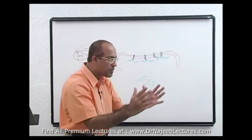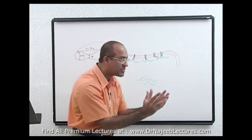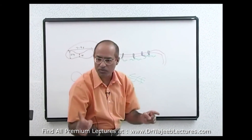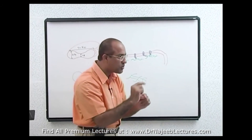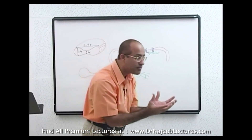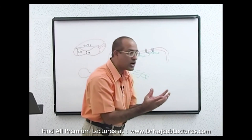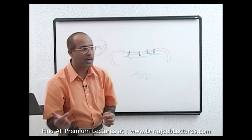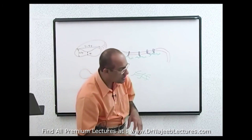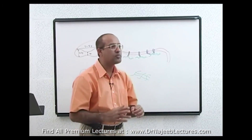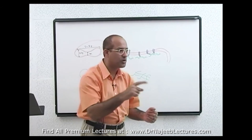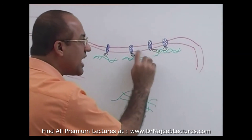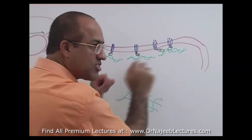The surface membrane of the RBC will become progressively less, and the shape of the RBC will become spherical. Because when volume is more and surface area is less, things automatically become spherical. So RBCs have a risk of becoming spherical if they lose their membrane. Spherical RBCs cannot bend and are not flexible.